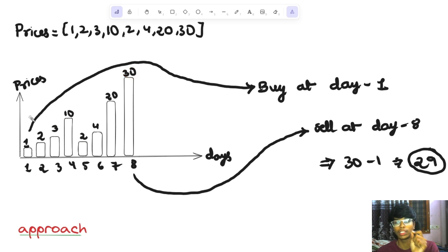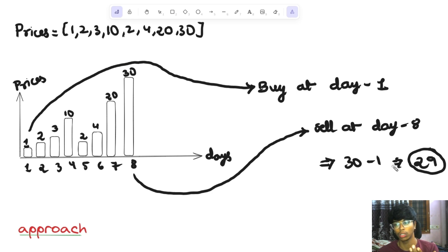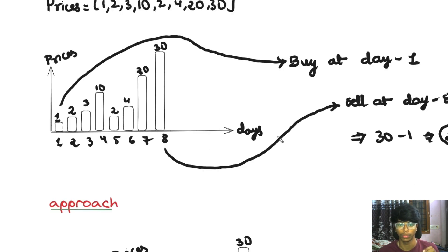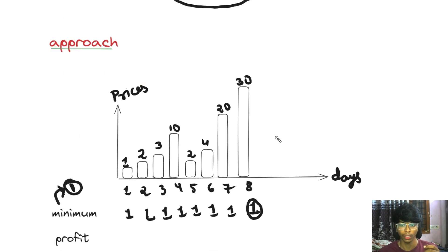So from the first day, the maximum profit was maximum. If the buy price is $1 per day and we sell at $30, we will return $29. So let's take this to the efficient approach.